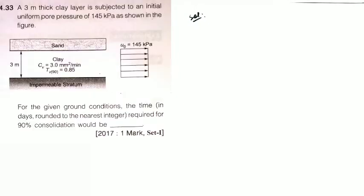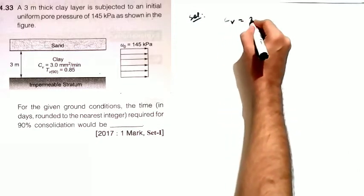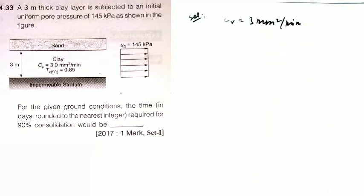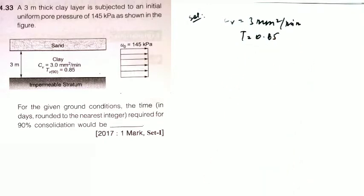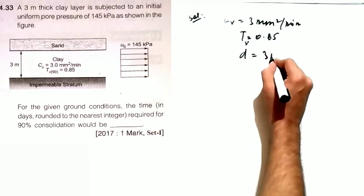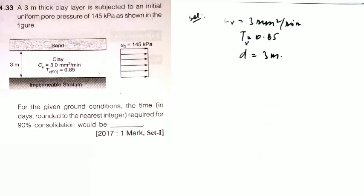The next question involves a 3-meter thick clay layer subjected to an initial uniform pore water pressure of 145 kPa. The clay layer is sandwiched between a sand layer and an impermeable stratum, meaning one-way drainage applies. The coefficient of consolidation Cv is given as 3 mm²/min and the time factor Tv for 90% consolidation is given as 0.85. You need to calculate the time in days, rounded to the nearest integer, for 90% consolidation.